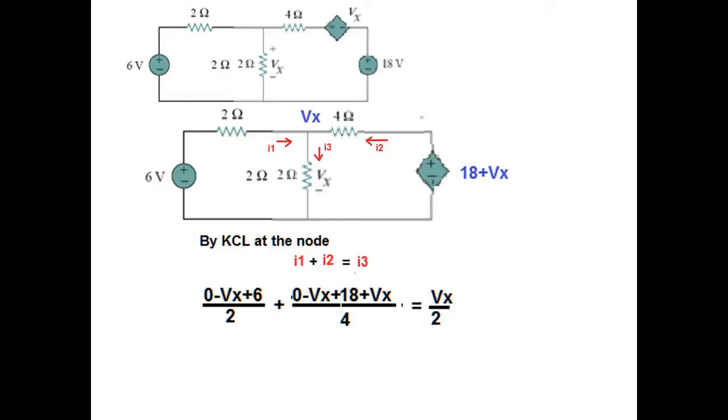I2 is 0 minus Vx, same direction for plus 18 Vx, divided by 4. Outgoing I3 is Vx over 2. Multiplying by the LCM of 4 and simplifying, we get Vx equals 7.5V.